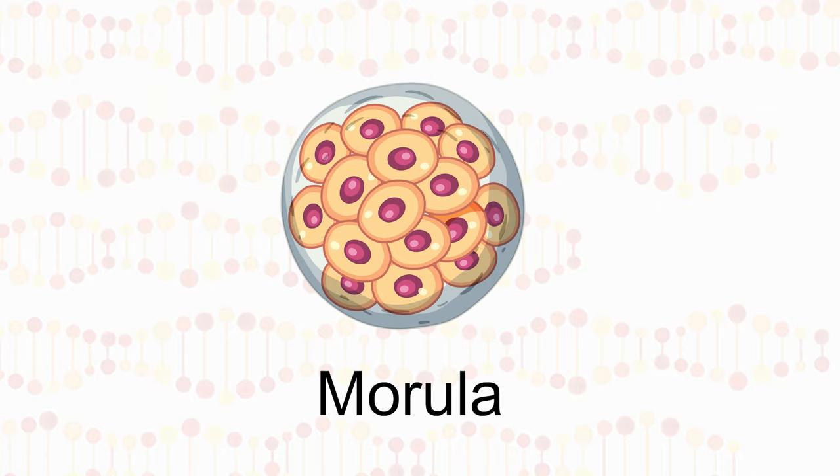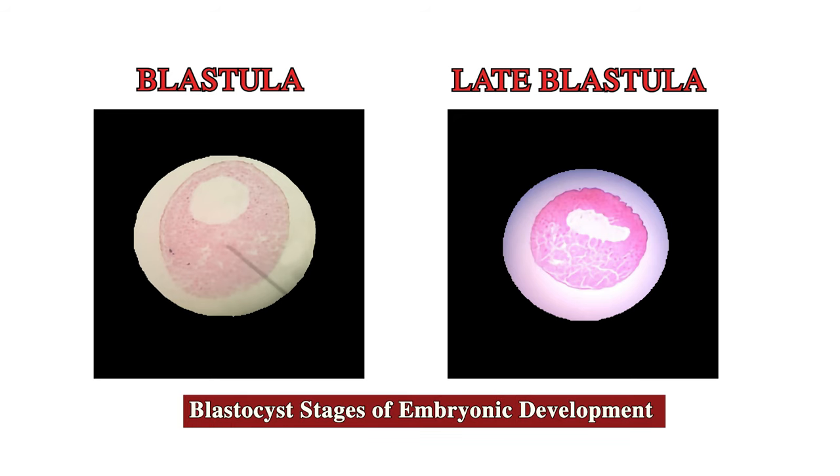Hello friends. In this session we are going to study the blastocyst stage of embryonic development in mammals. The mammalian zygote undergoes a few cycles of mitotic division to form a solid ball of cells called morula. The cells continue to divide further and a cavity is formed within it at a later stage. This stage is called the blastocyst stage of embryonic development, which corresponds to the blastula stage of other organisms.